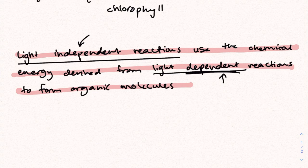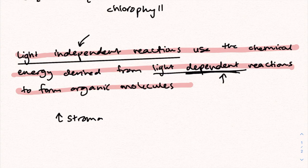Light-independent reactions occur in the stroma of the chloroplast. And this is because the stroma contains the appropriate enzymes and a suitable pH for the Calvin cycle to occur. And it's basically just an aqueous or a fluid-filled space in the chloroplast.